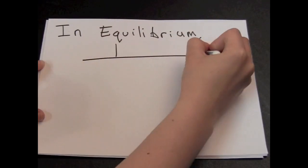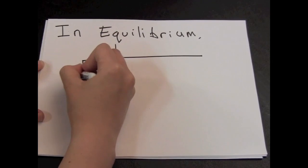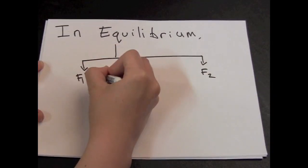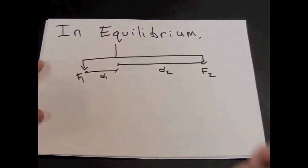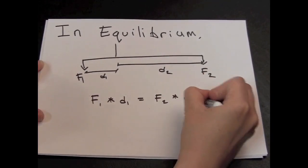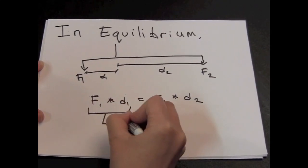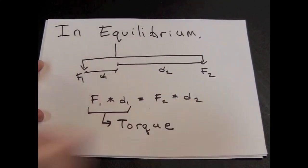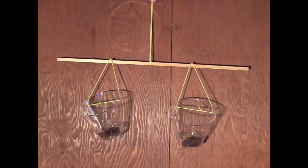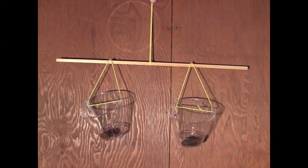In equilibrium, where we have forces F1 and F2 balancing each other at distances D1 and D2, the counterclockwise force times distance must equal the clockwise force times distance. Force times distance has a special name, torque, from the Latin word to twist. In 2D equilibrium, clockwise and counterclockwise torques are balanced.